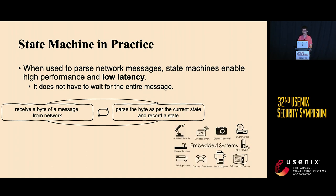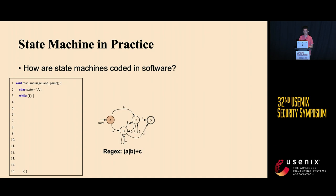Due to its high performance, state machine-based parsing has been widely used in many critical systems like routers or robotic systems. Next, I'm going to use a specific example to illustrate how software developers would implement a state machine in source code.